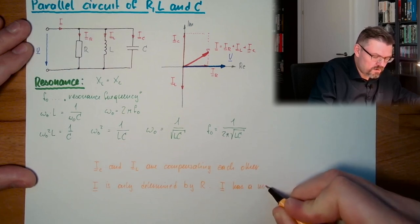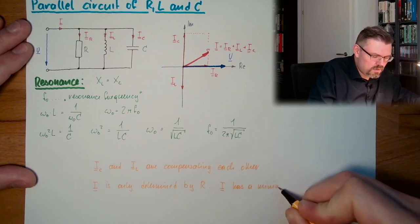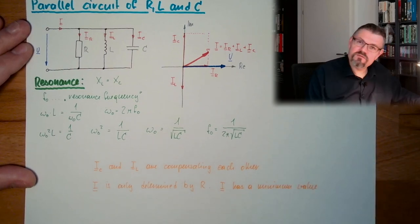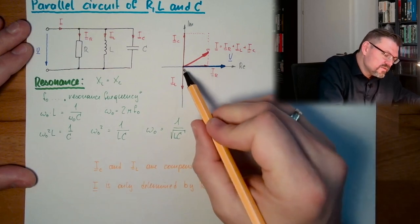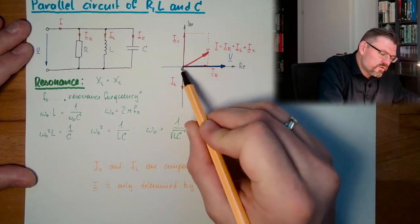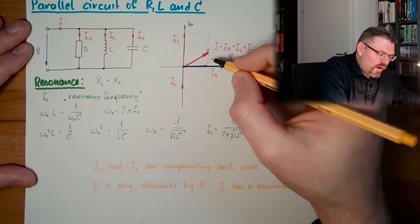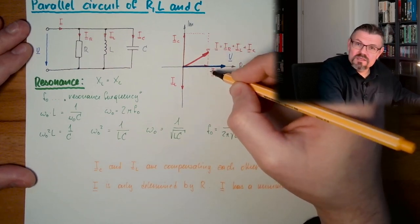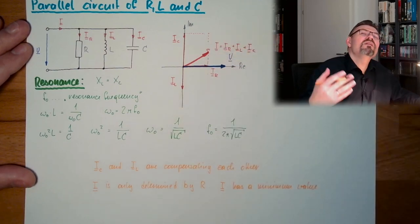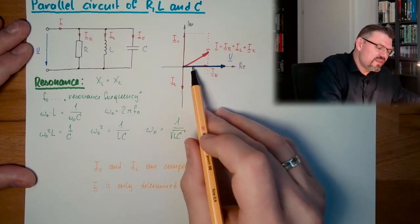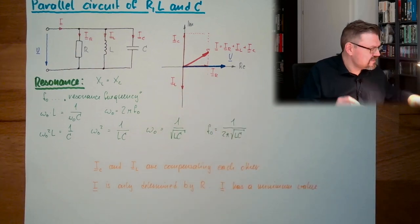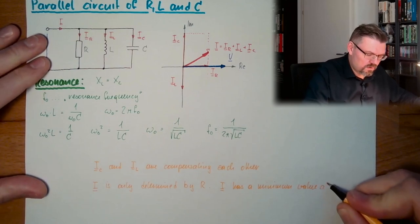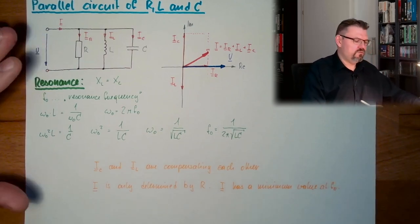And I has a minimum value at the resonance frequency. Why? Because look at the pointers. This is the shortest pointer possible. You can go up, you can go down, everywhere. But IR will always stay there, so it can only be longer if they are not leveling exactly each other. So IR is at its lowest level at F0.